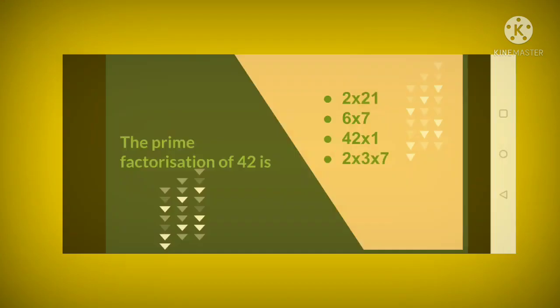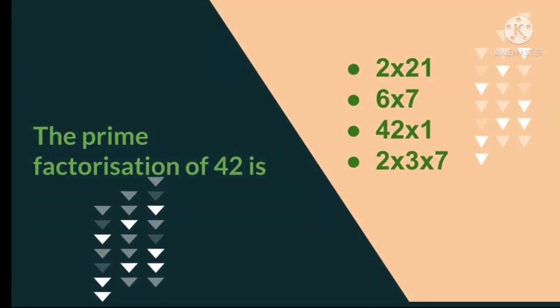Question number 10: The prime factorization of 42 is 2 x 21, 6 x 7, 42 x 1, or 2 x 3 x 7.